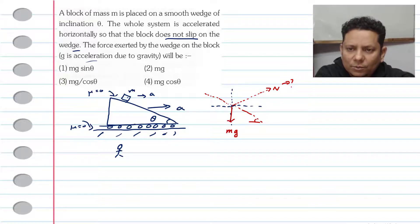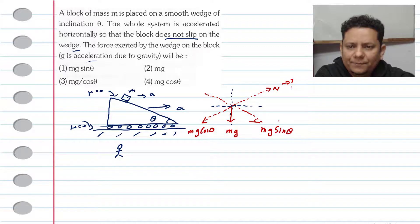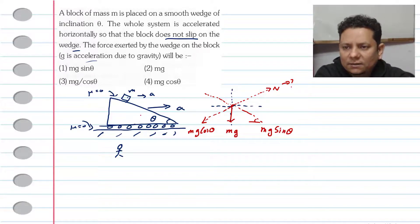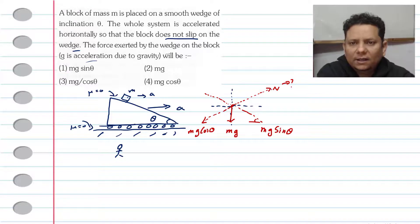If we take two components of Mg: one component along the incline surface is Mg cos theta, and the other component perpendicular to the incline is Mg sin theta. So when the system is at rest, the normal force equals Mg cos theta.